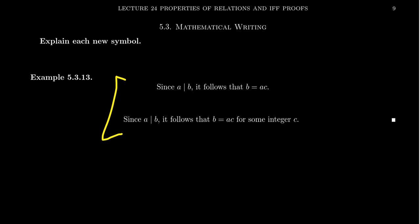So consider the following two sentences here. Since A divides B, it follows that B is equal to AC. This is a fine sentence, but the symbols A and B were probably already introduced earlier in the writing, but what is this symbol C?